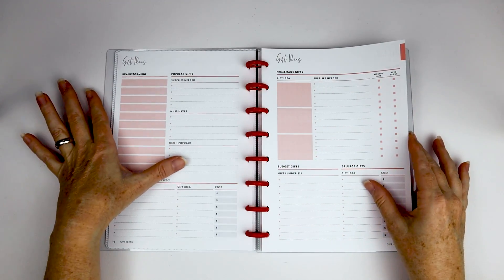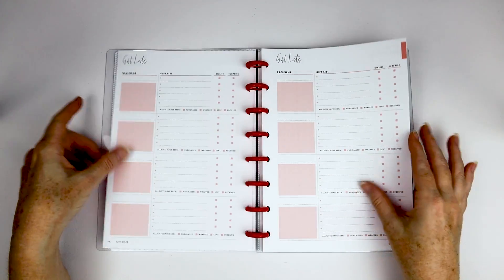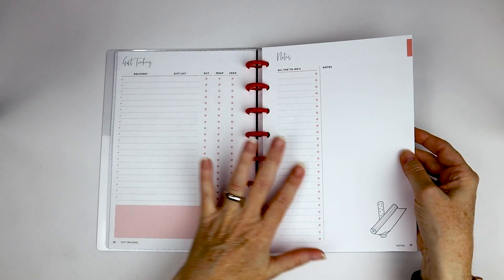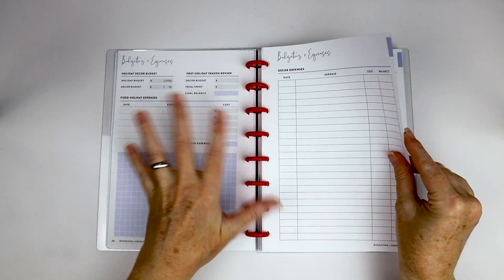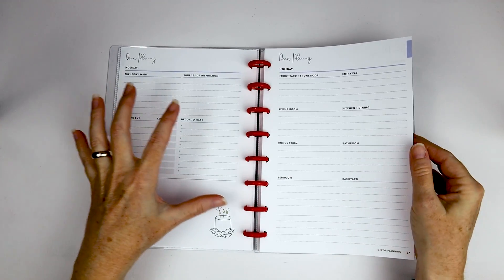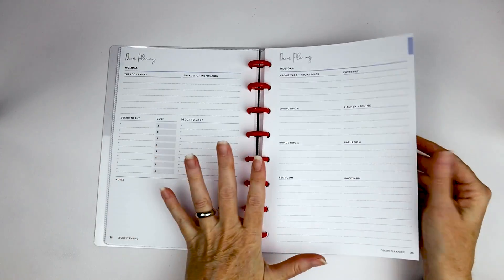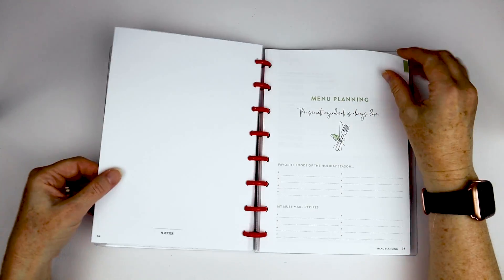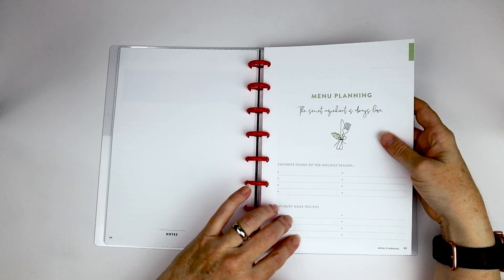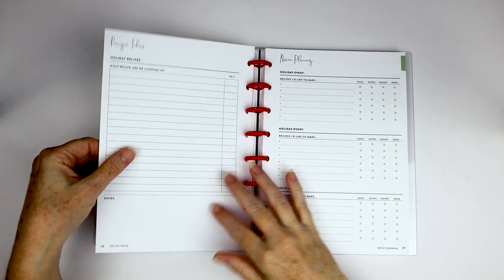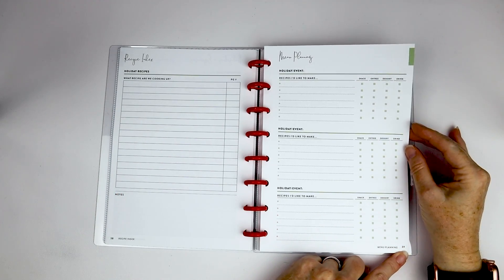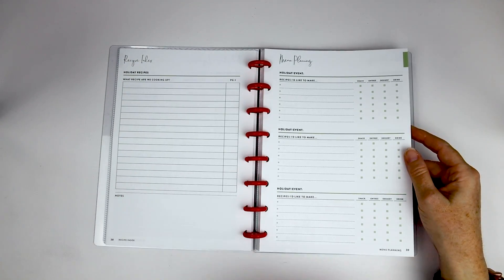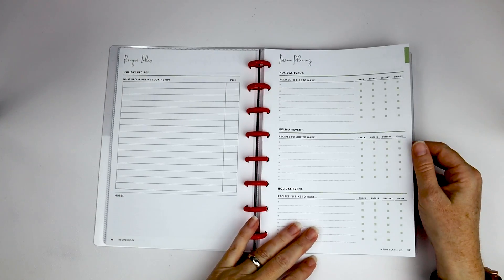They have a budget section here at the beginning of the gift giving section, gift ideas. Quite a few pages of that. Gift tracking, so if you're ordering things, you can check that. Notes, thoughts and wishes, decor planning, so again, budget for decor. It's kind of broken down by area. You have storage information, so what's in different boxes. There's the menu planning section, so favorite foods and must-make recipes. If you would like to budget for that. There's that section. Recipe index.